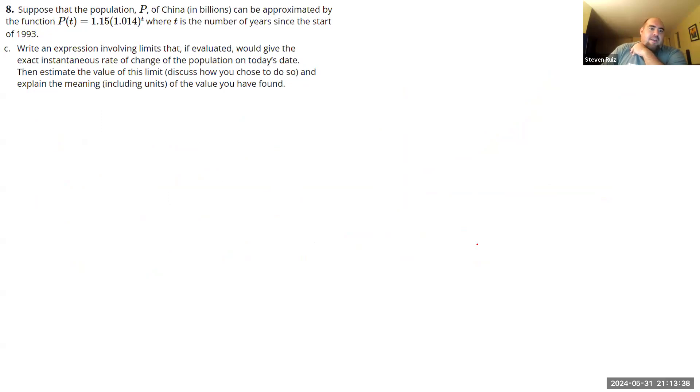So moving on to Part C, write an expression involving limits that, if evaluated, would give the exact instantaneous rate of change of the population on today's date. Then estimate the value of this limit. Okay, so let's answer the first sentence first. So we want an expression involving limits that would give us the exact instantaneous rate of change. So how do we find rate of change? So let's start with average rate of change. So, and by the way, today's date. So if I want to find the average rate of change, basically how am I going to do that? I'm going to find the population at some later time, subtracted by the population at some earlier time, and I need to know how far apart those times are.